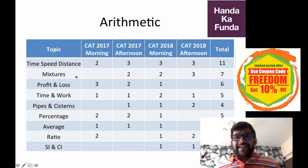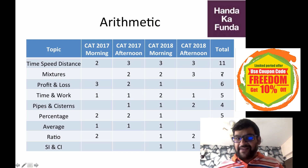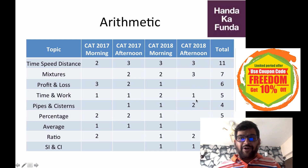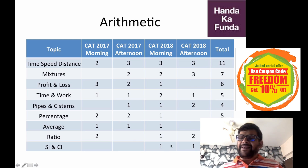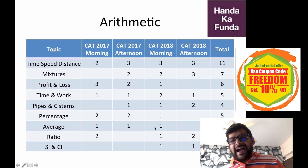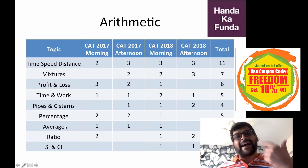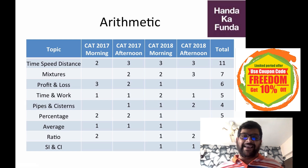Mixtures and allegation — a topic related to ratios — gave you seven questions across four papers. Profit and loss gave six, time and work appeared in all papers giving five questions. Topics like simple interest and compound interest are not really that important, giving only two questions. Averages gave only three questions, but please keep in mind the concept of averages is applicable in a lot of other areas, which is why it remains an important topic.